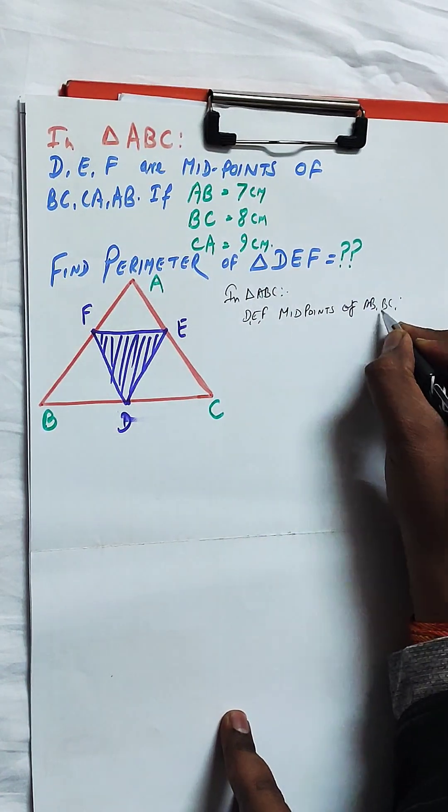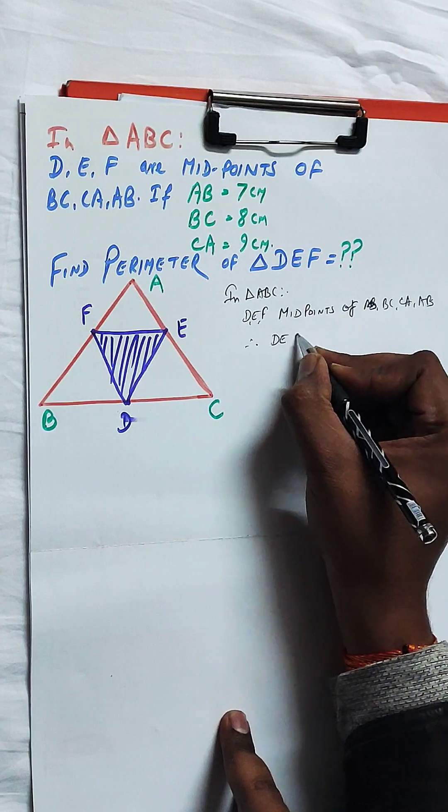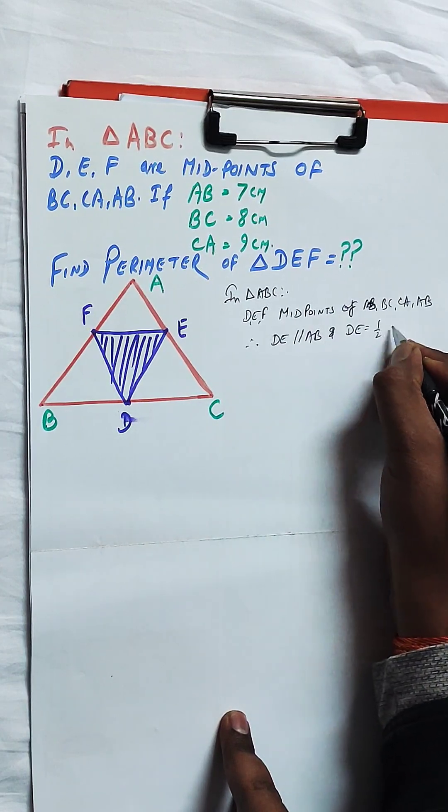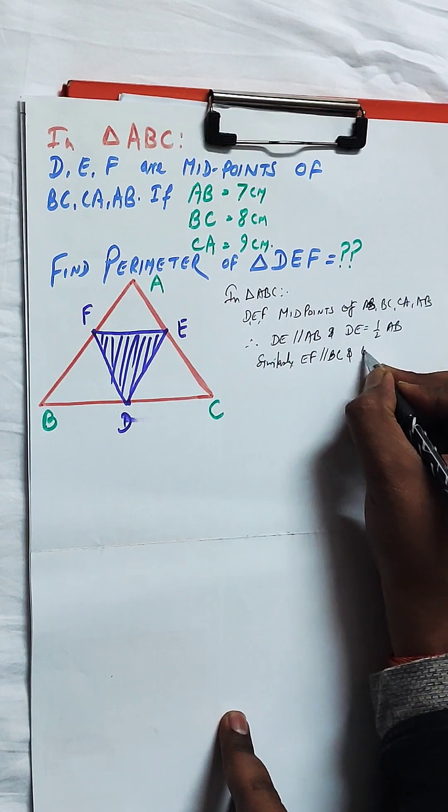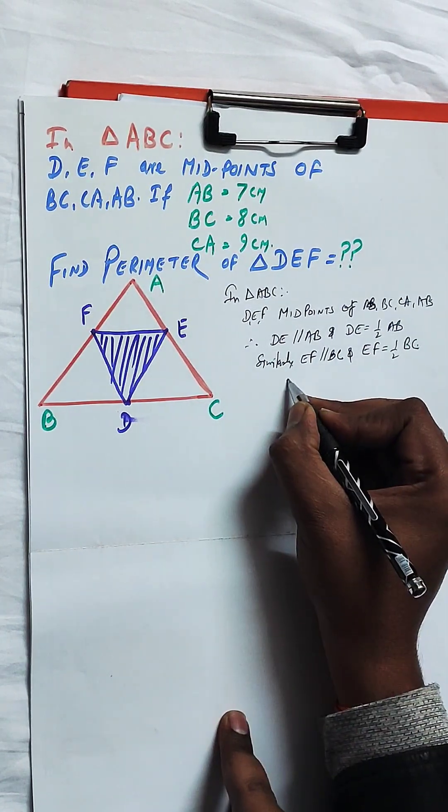So, if we construct the triangle DEF, we can see that DE is coming as parallel to AB and DE is half of AB.